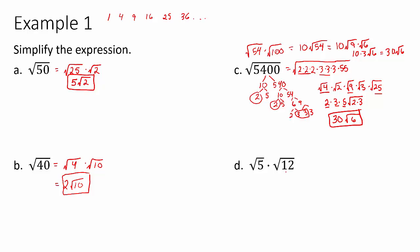For part d, we have two square roots being multiplied together. The rule works in reverse: we can combine them as the square root of 60, since 5 × 12 = 60. You're only allowed to multiply things inside the radical together, or things outside together — you can't mix inside and outside numbers. Once we have √60, we see it's divisible by 4, so √60 = √4 × √15 = 2√15.